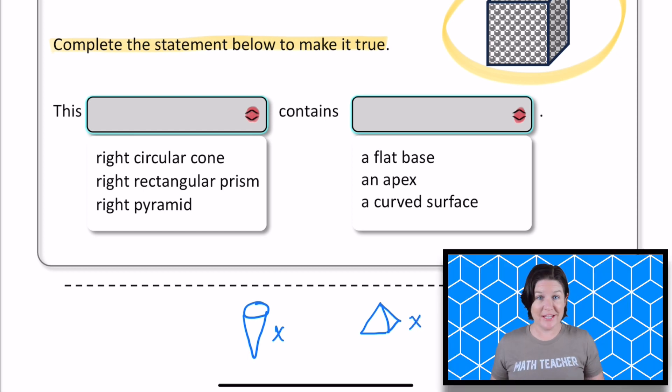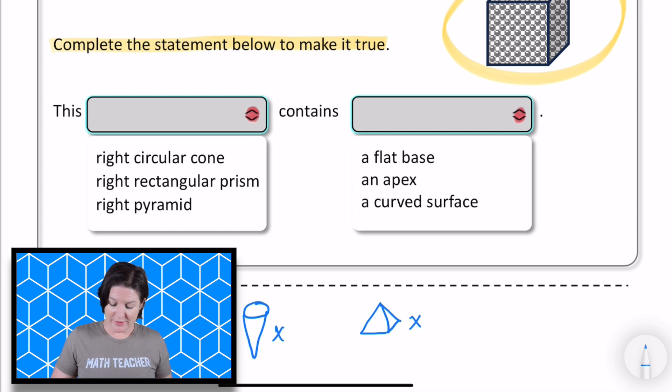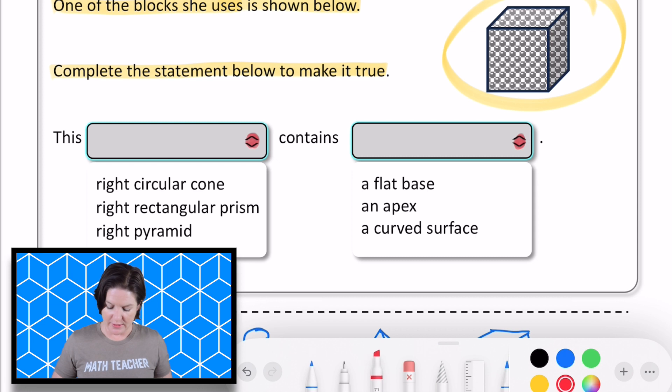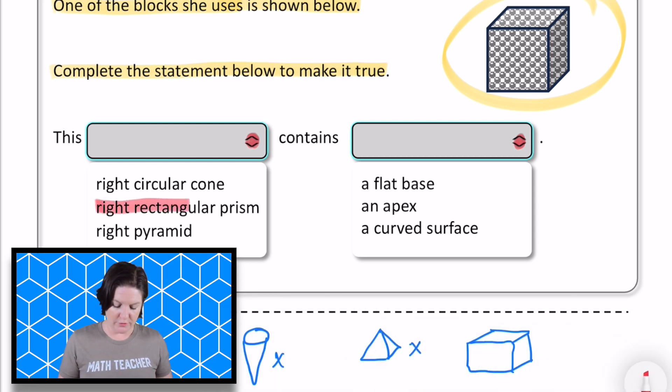And I tell you what, a right rectangular prism looks like this. It's just a, okay, but it also can look kind of like a cube too. So this cube example that Willow was using is also a right rectangular prism. So yes, that is the one that we want to choose for that one.